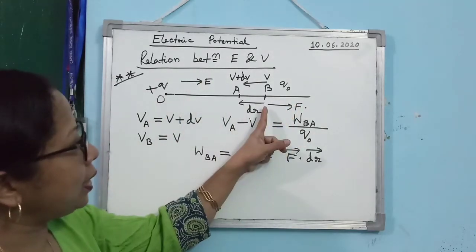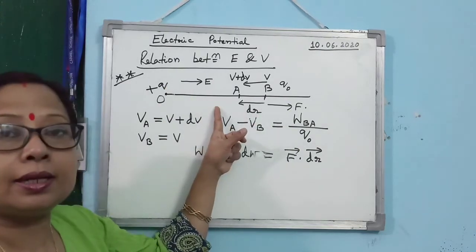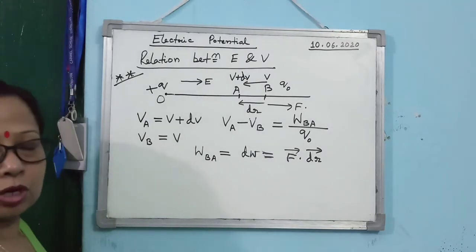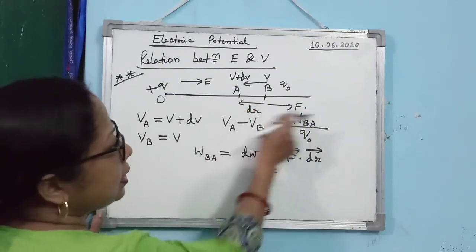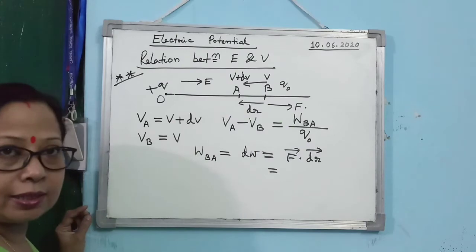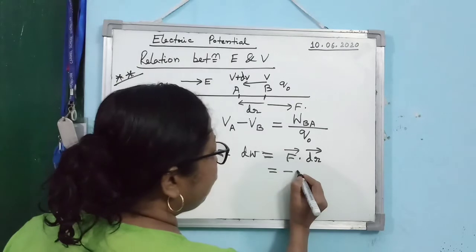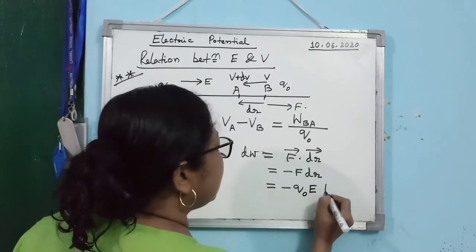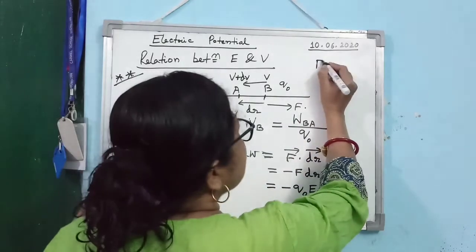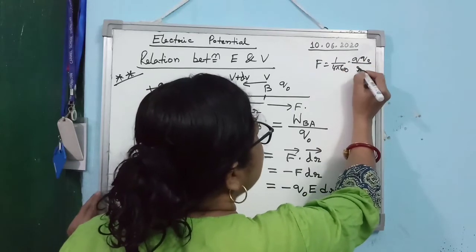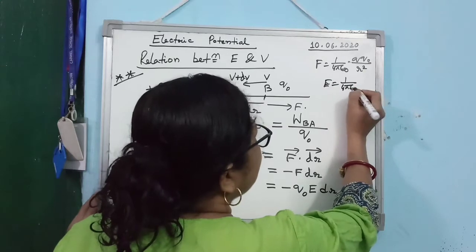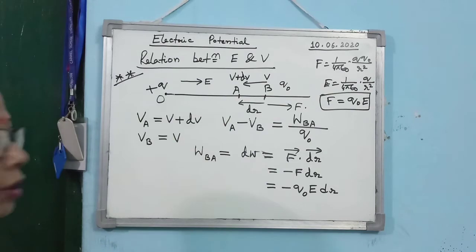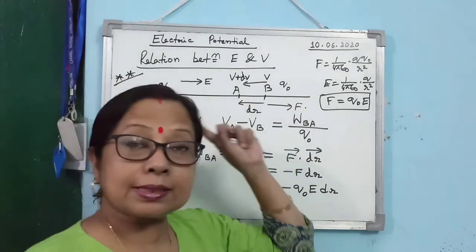The work done DW = F · DR = −F·DR. Now F = Q₀ × E (since electrostatic force equals test charge multiplied by electric field intensity). So DW = −Q₀·E·DR. Substituting into VA − VB = W_BA / Q₀: we get (V + DV) − V = −Q₀·E·DR / Q₀. The V's cancel and Q₀'s cancel, giving E = −dV/dR.